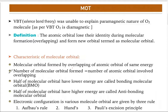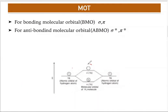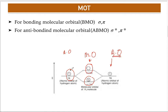The second point: the number of molecular orbitals formed equals the number of atomic orbitals involved in the overlapping. For example, two atomic orbitals combine to form two molecular orbitals — one bonding and one anti-bonding. So the number of molecular orbitals formed equals the total number of atomic orbitals that overlap.